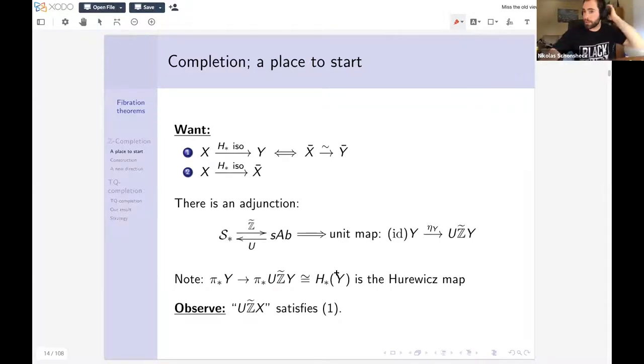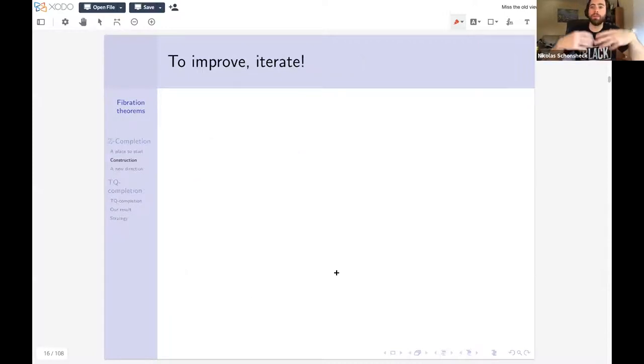What that tells us is that this construction UZ tilde satisfies that first property that we wanted. That's not too hard to check. On the other hand, it's also not too hard to cook up an example that shows we usually don't have the second property. We usually do not have a nice comparison from X to UZ tilde X. But it's a place to start. And to improve this, to build the completion, I'm going to just sort of fatten this construction up. So I'm going to iterate this construction.